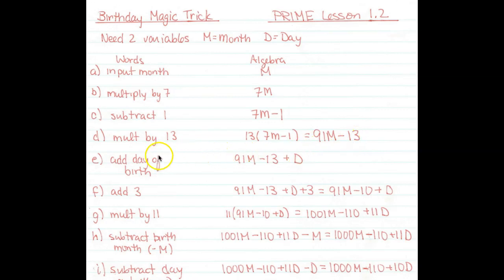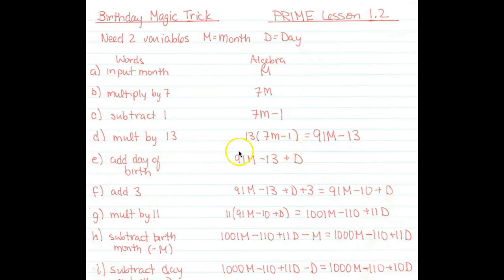Next it says 'add the day of birth,' so you're going to add d. Some of you used your actual numeric month and day — that's not going to work; we need month and day to be variables. Next, add 3. The like terms here are minus 13 and 3, and when I combine them I get minus 10.